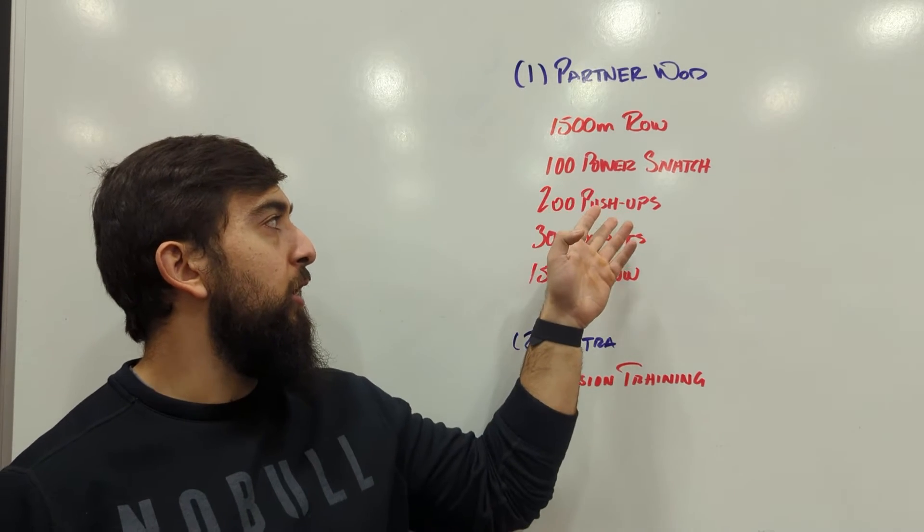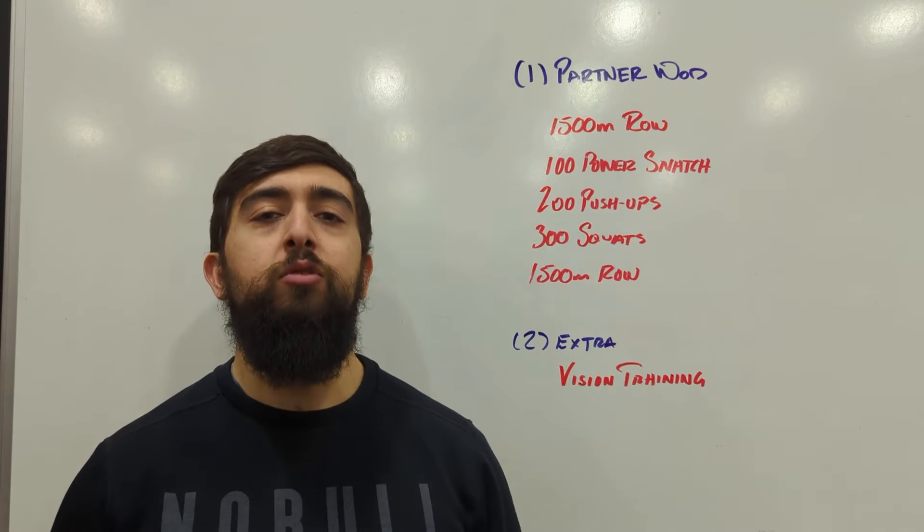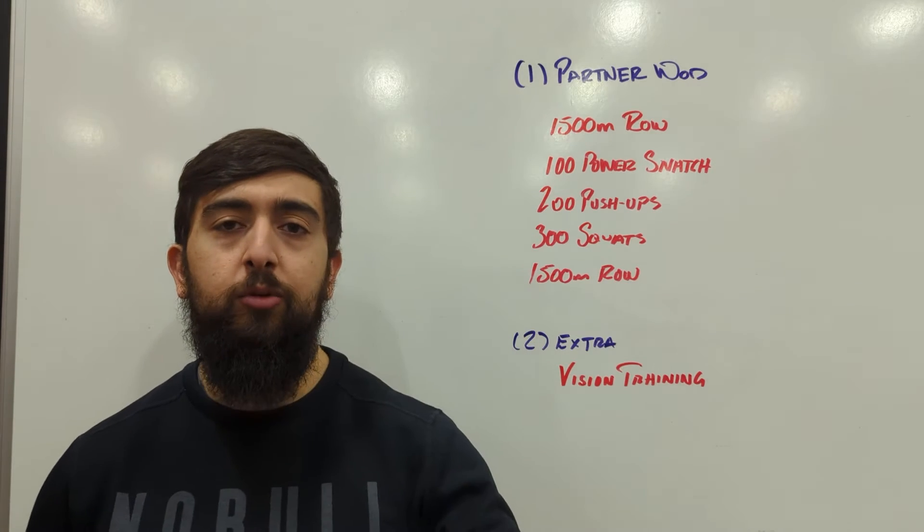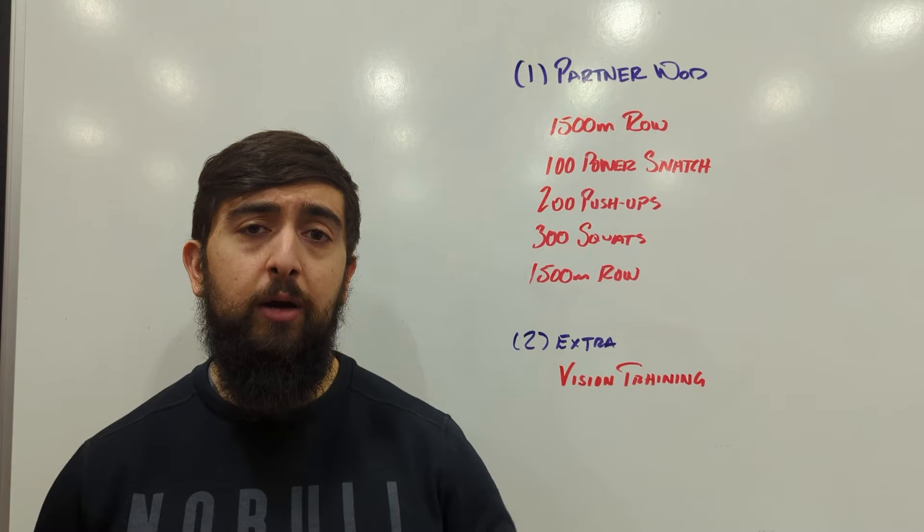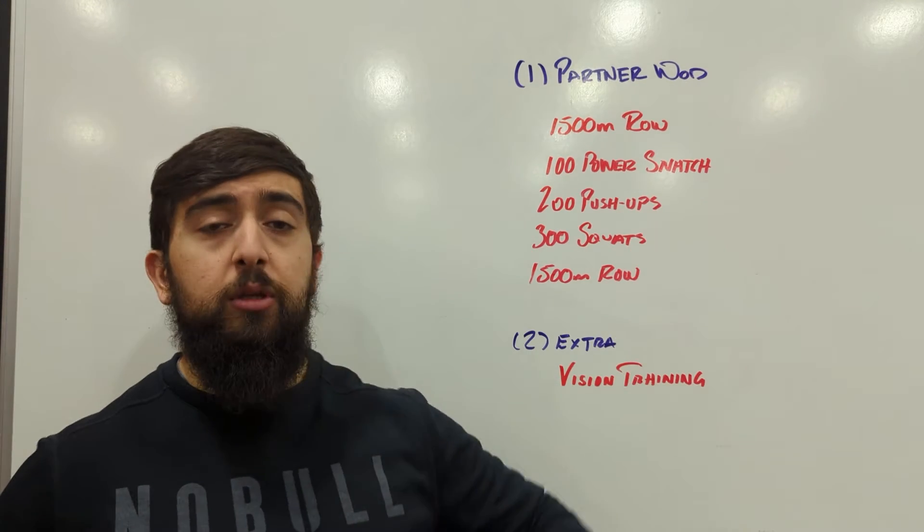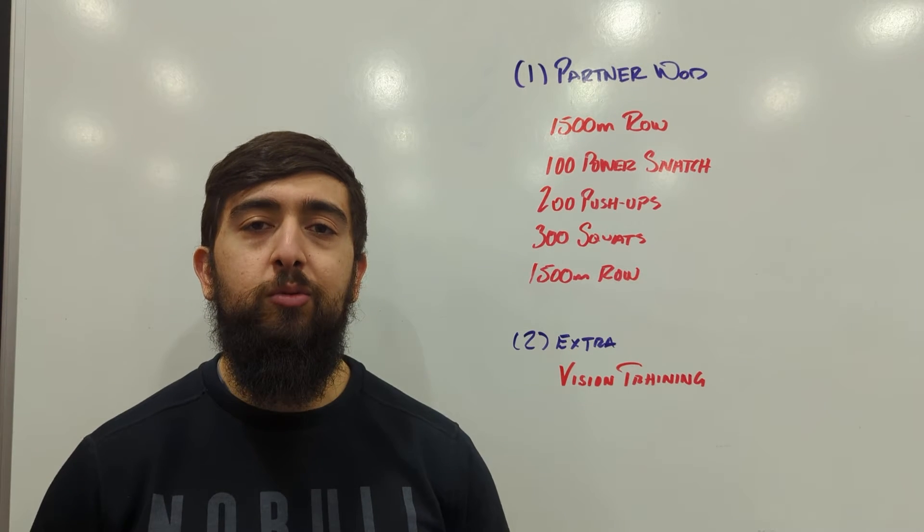So 750, 50, 100, 150, and then 750 again. Today's workout is an overall body workout. We're hitting some conditioning with the row, and then we're doing some barbell cycling with the power snatches. Also working on some pulling, pushing with the push-ups, and then some lower body muscle endurance with the squats.